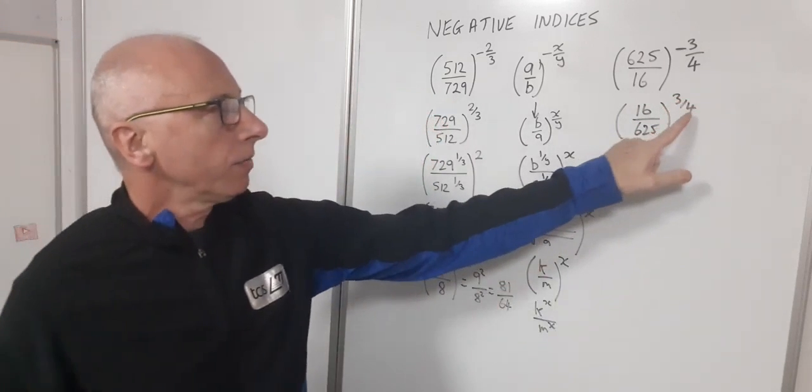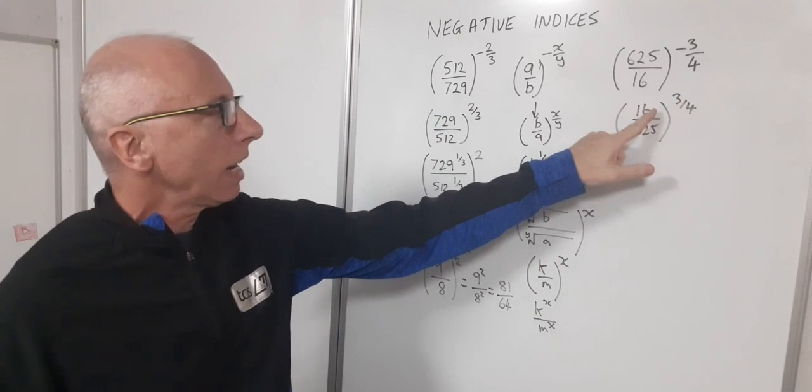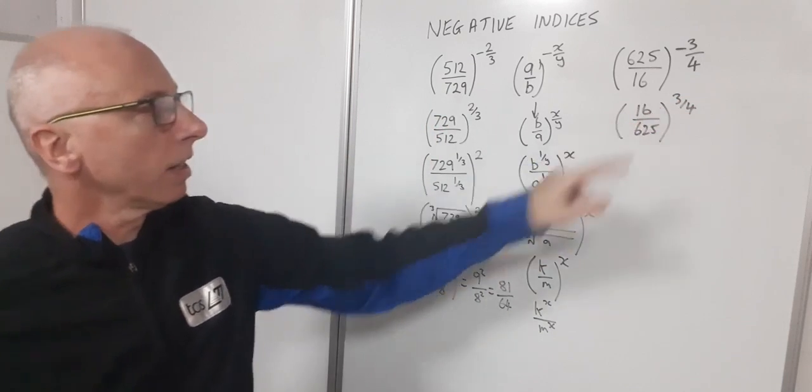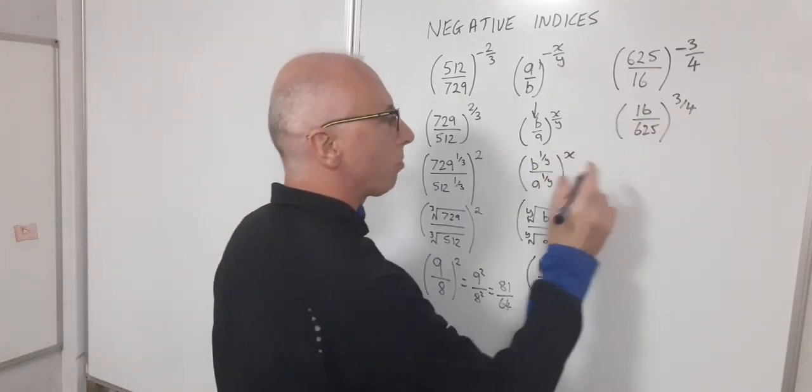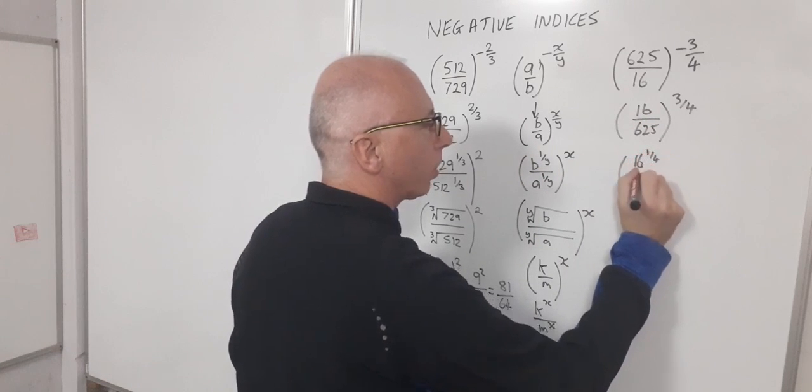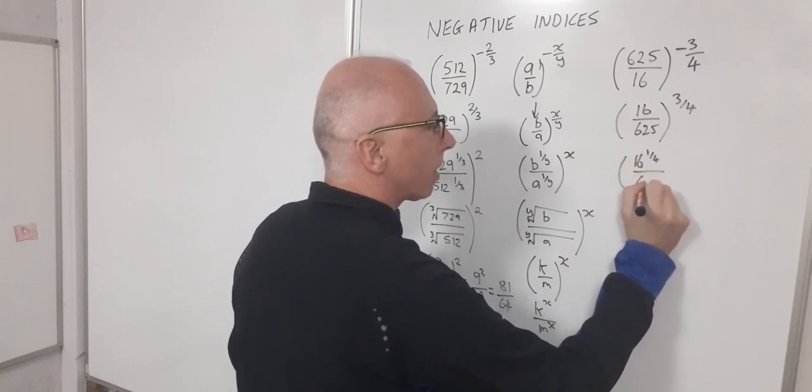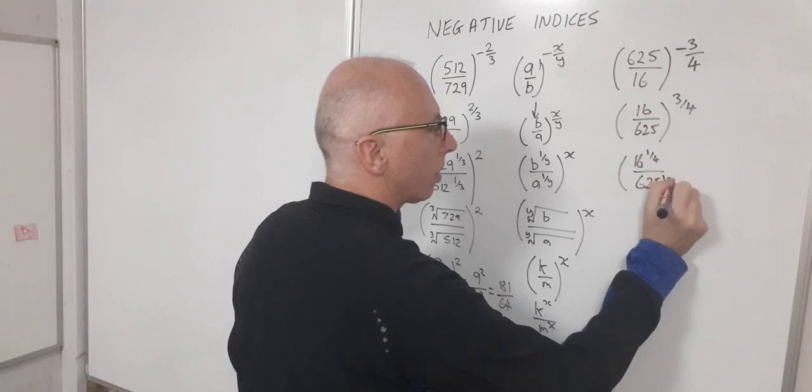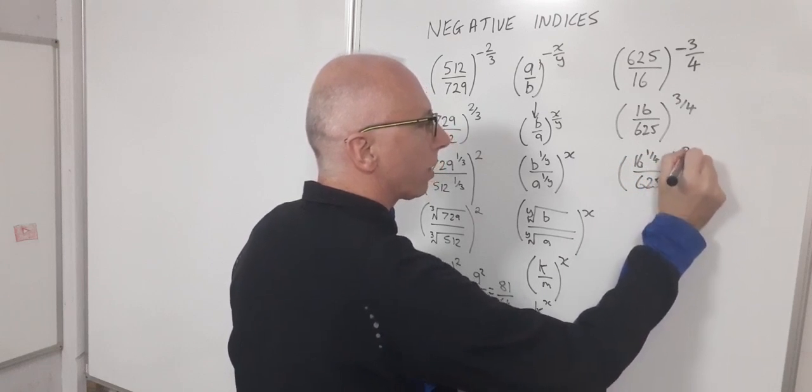Okay now I can invite this denominator as the fourth root inside the brackets copying this rule. So now I've got 16 to the 1 quarter divided by 625 to the 1 quarter raised to the power of 3.